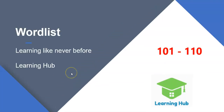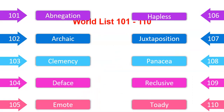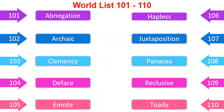Hello and welcome to word list 11. In this word list there are 10 words and today we are going to learn about these 10 words. These words are abnegation, archaic, clemency, deface, emote, and hapless.